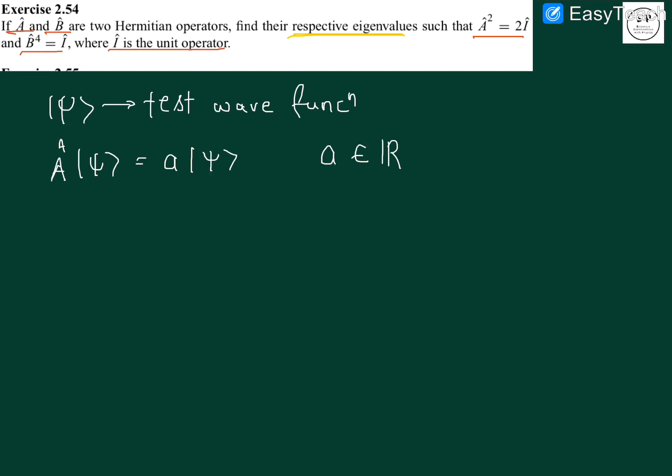Now if I again apply A cap operator on this particular thing, I get A squared, A cap on n psi. Over here I am having A cap square, A square psi, which gives me a square psi. Let me denote this as equation one.